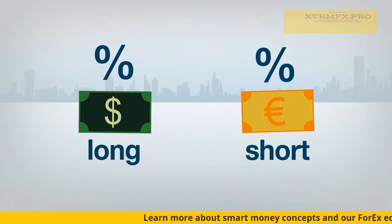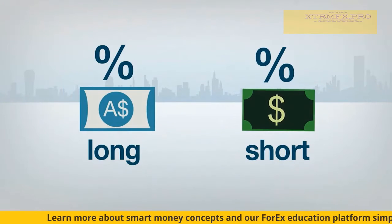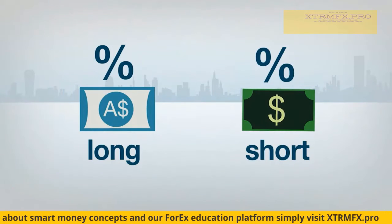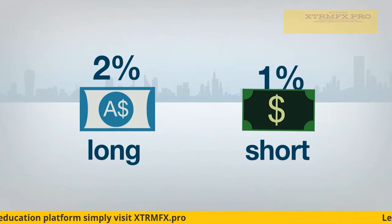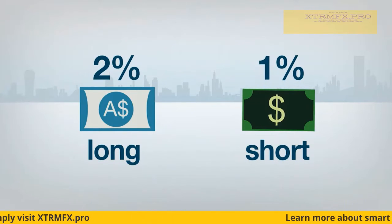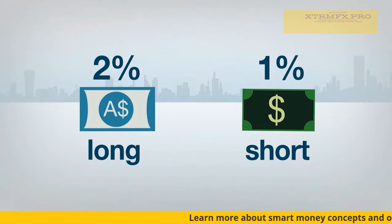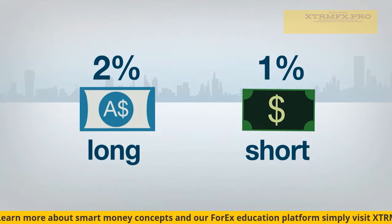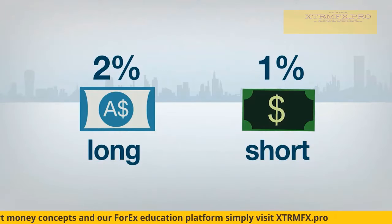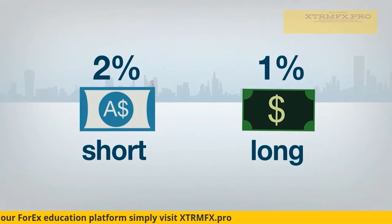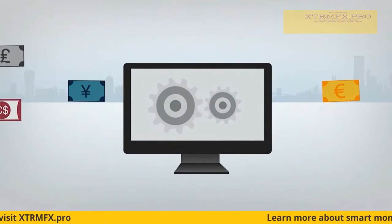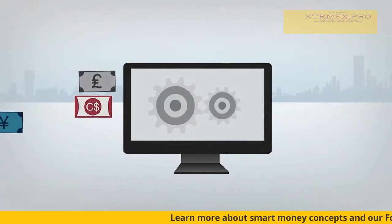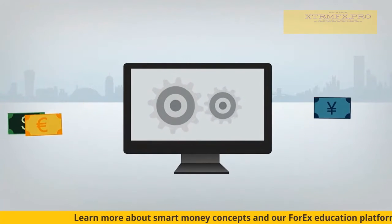For example, suppose an investor holds a position in the Australian dollar versus the U.S. dollar currency pair. Say the overnight lending rate for the AUD is 2% and for the USD is 1%. If the investor is long the AUD-USD pair, he is long the AUD and short the USD. Since the AUD has a higher interest rate, the investor receives a credit. However, if he were short the AUD-USD pair, he'd pay a debit. Financing is performed automatically by your brokerage firm, but it's important to understand its financial impact on the trade.